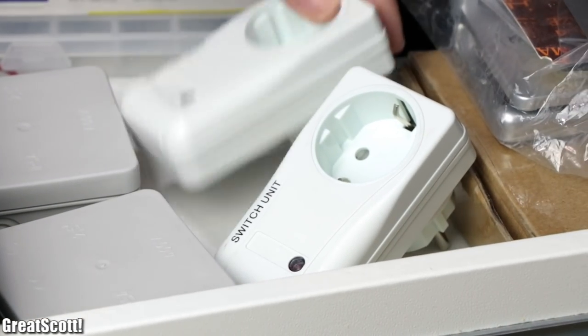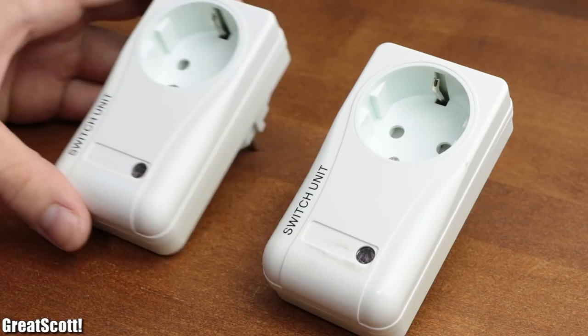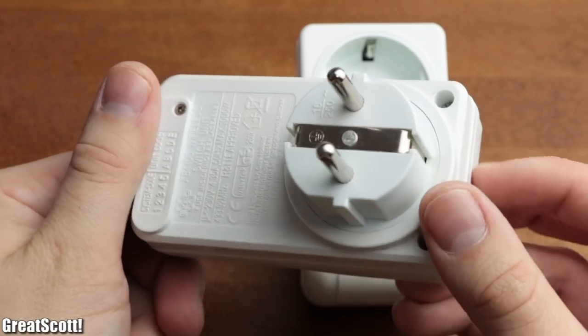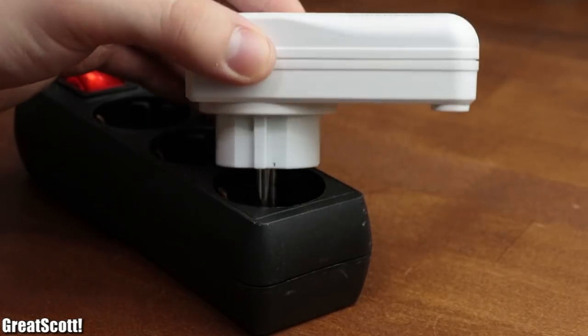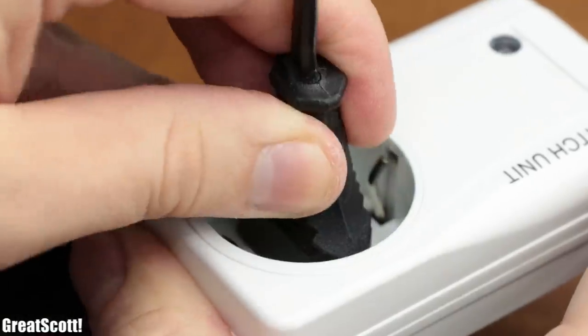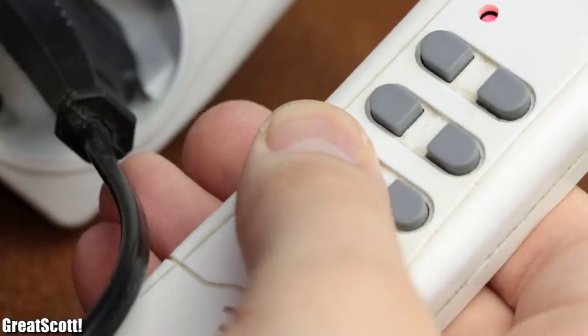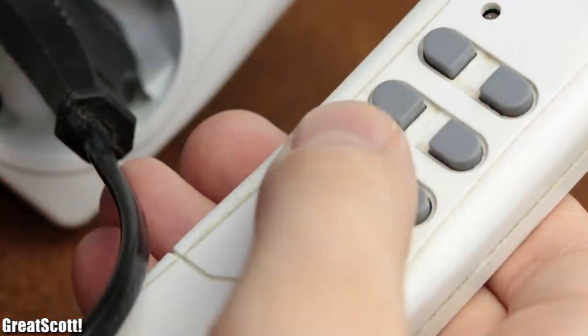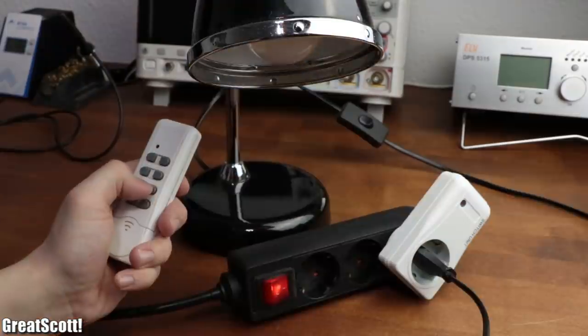If you're like me, then you probably have one or two of those remotely controlled sockets lying around. By simply inserting them into an outlet and plugging in your AC appliance, you can use the included remote to wirelessly turn on or off all kinds of appliances.